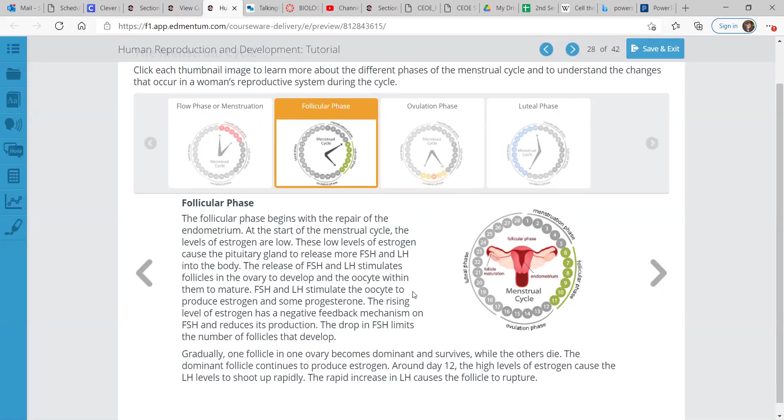Gradually, one follicle in one ovary becomes dominant and survives while the others die. The dominant follicle continues to produce estrogen. Around day 12, the high levels of estrogen cause the LH levels to shoot up rapidly, and this rapid increase in LH causes the follicle to rupture.